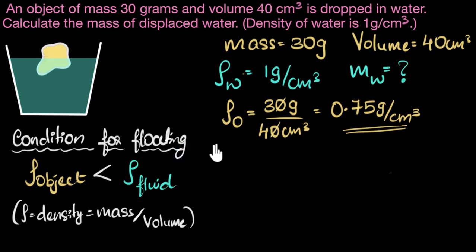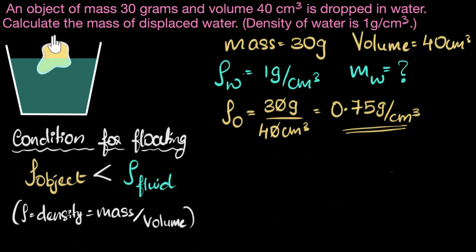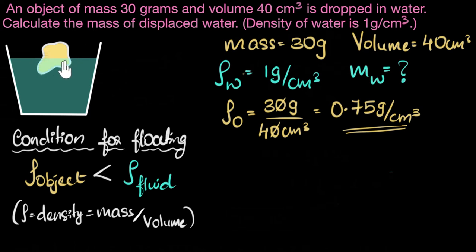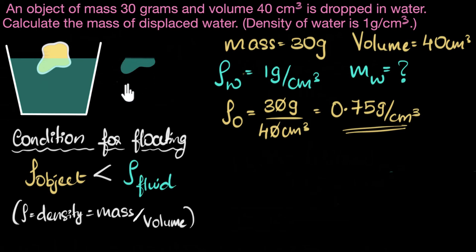The density of our object is 0.75 grams per cm cubed, while the density of water is one gram per cm cubed. So our object has a smaller density than water, which means the condition for floating is satisfied, and our object is going to float. So if we put the stone in water, it's going to look somewhat like this — floating there. Now that we know it's going to float, how do we calculate the mass of the displaced water?